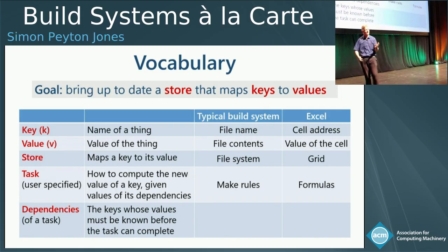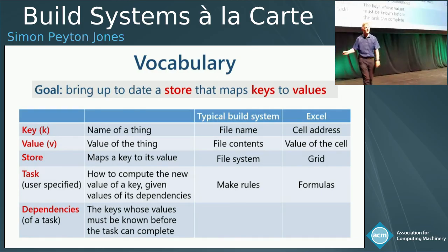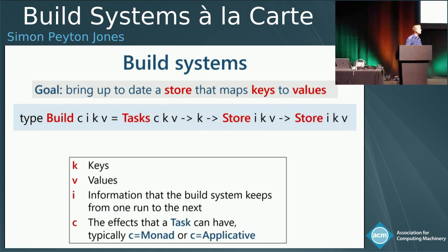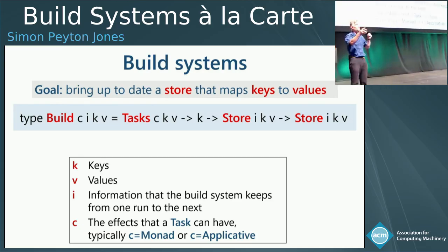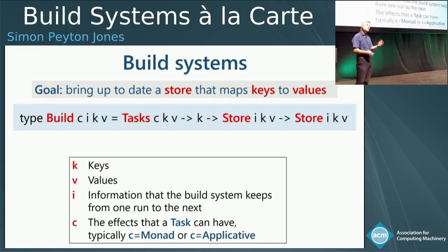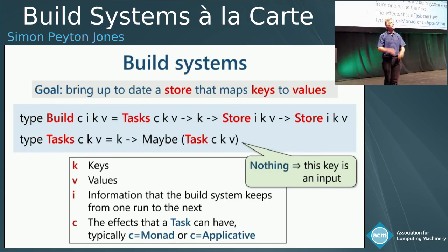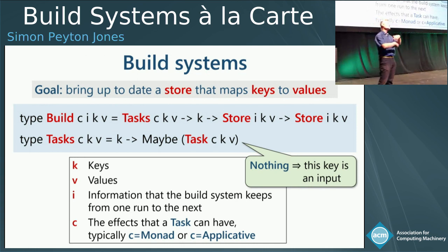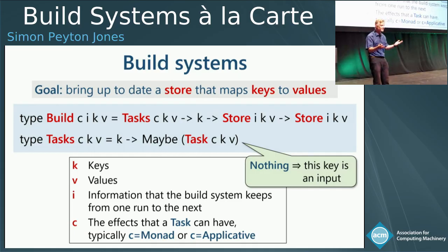There's another column for Excel that would be very self-explanatory. What is a build system modeled as a Haskell function? A build system is just a function that takes a description of some tasks, a key and a store, and returns a new store in which the key has been brought up to date. What is this tasks thing? It's just a mapping of keys to a maybe task. Why maybe? Because it returns Nothing for an input key like an input file that doesn't have a rule to make it. If there's a rule, it returns Just of a task.